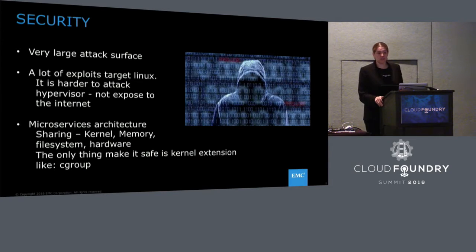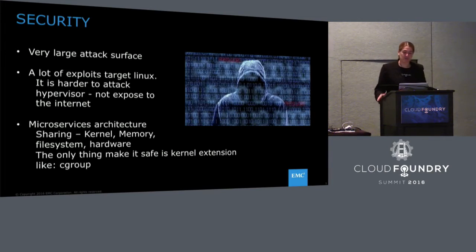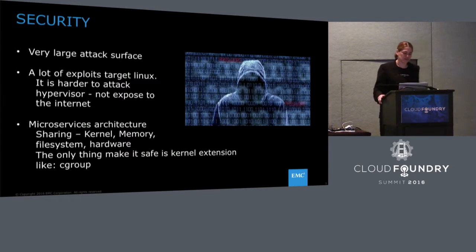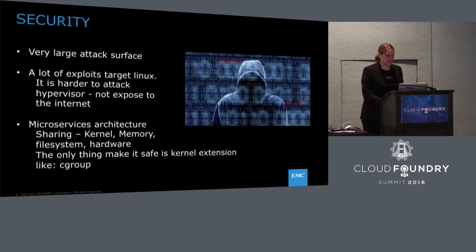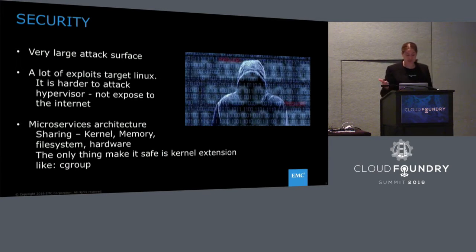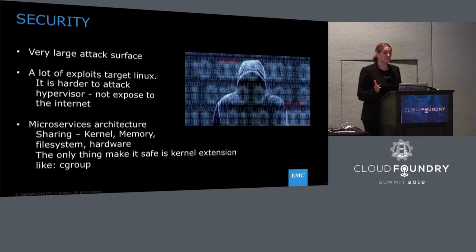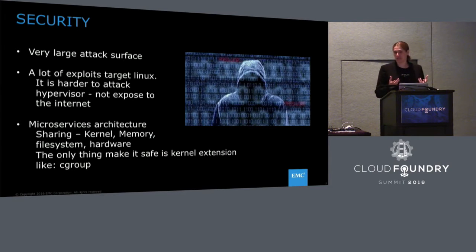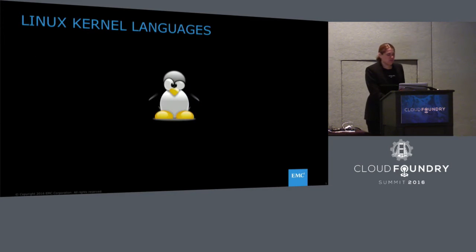When you're looking at Linux, which is a very popular operating system, there are a lot of exploits targeting it. Versus the hypervisor, people target it less because it's usually behind the internet and not exposed. The last security problem I noticed is that microservices architectures are sharing a lot of stuff — the kernel, the memory, the file system, the hardware. The only thing actually protecting it is a kernel extension like Cgroups. So again, it's not very native.